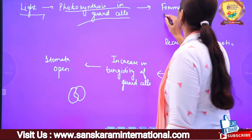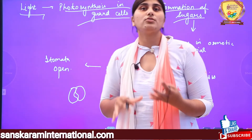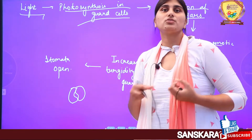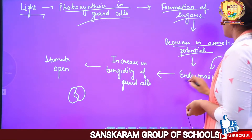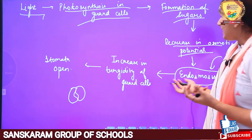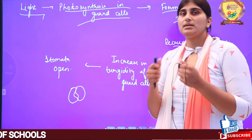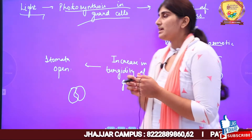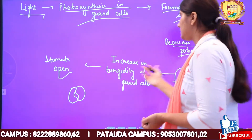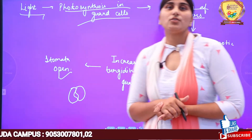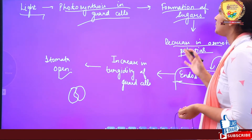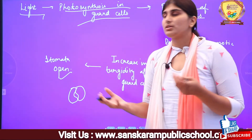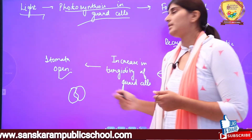Photosynthesis होगी तो glucose यानि sugar का production होगा। Sugar मतलब solute बढ़ेगा, तो guard cell की osmotic potential घट जाएगी। Cell को water की ज़रूरत होगी क्योंकि solute बढ़ रहे हैं, तो बाहर से water उस cell के अंदर move करेगा — process क्या होगी? Endosmosis। Endosmosis होने की वजह से guard cells turgid हो जाएंगी, swell up होके wall पर pressure लगाएंगी और turgor की वजह से stomata open हो जाएगा।